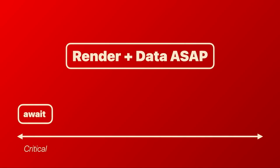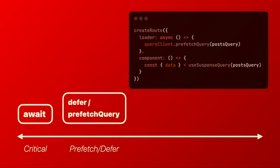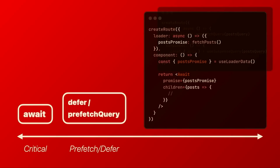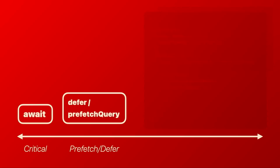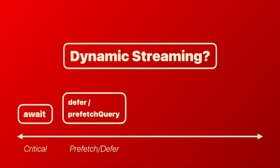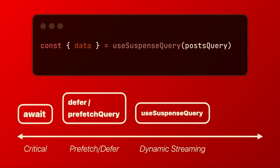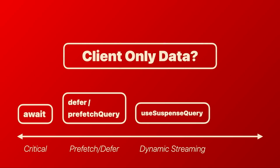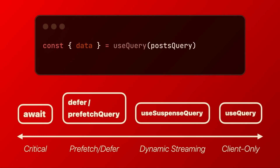Or if you need some data quickly but don't want to wait to render, you can delay the data and render as soon as possible by calling prefetchQuery. Or you can even just defer using the built-in router stuff, and those promises will stream to the client. For dynamic streaming — if you can't hoist something up to a loader but need it streamed with SSR — just call useSuspenseQuery. That one hook gets you fully dynamic streaming with SSR. And obviously for client-only data, just use useQuery.